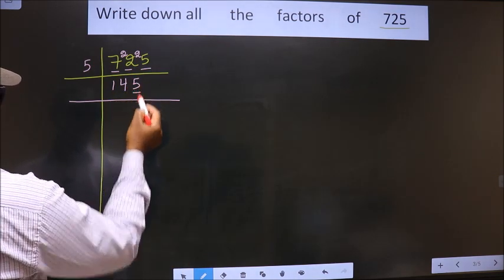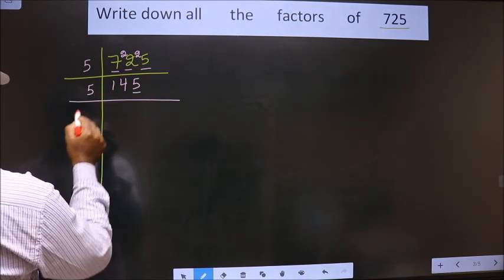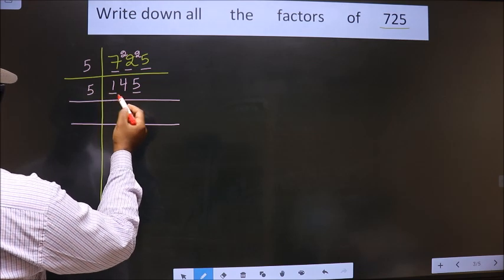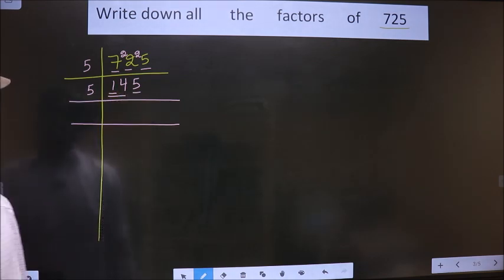Now, for this number, last digit is 5, so we take 5 here. First number is 1. 1 is smaller than 5, so we take 2 numbers, that is 14.